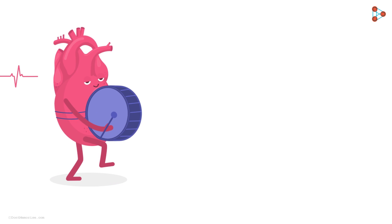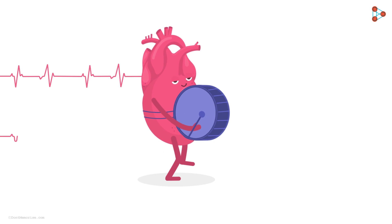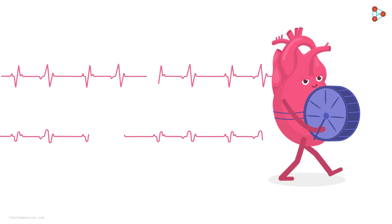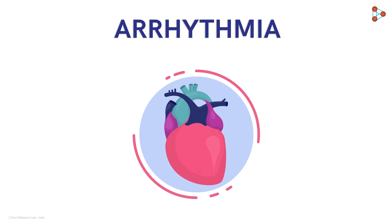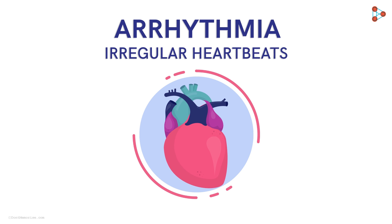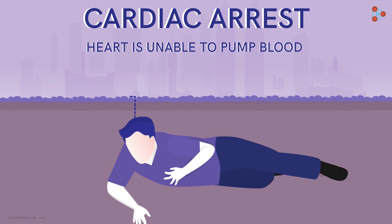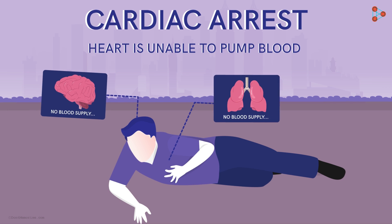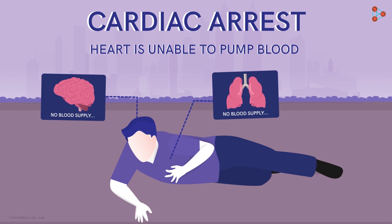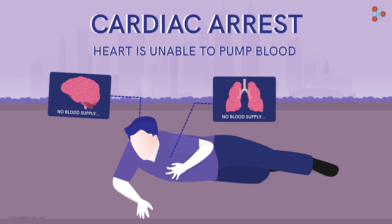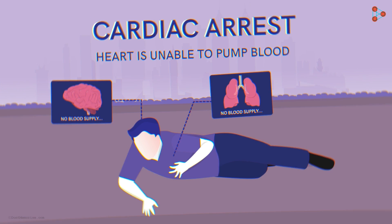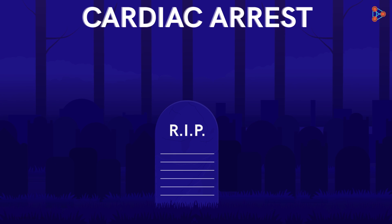A human heart is triggered to beat with regular electrical pulses. But if these electrical pulses become erratic, it results in irregular heartbeats — a condition in medical terms called arrhythmia. This will result in disrupted pumping of the heart. As a consequence, the heart is unable to pump blood to vital organs like the brain and lungs. In a few seconds, the patient loses consciousness and has no pulse. The patient almost stops breathing or is only gasping, and may even die if not administered with proper treatment.